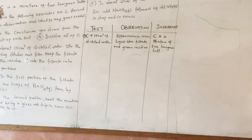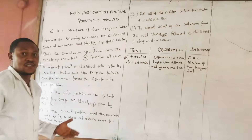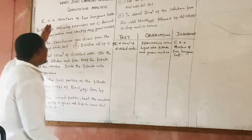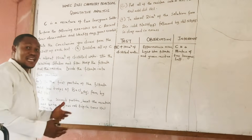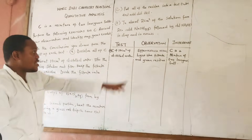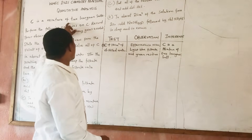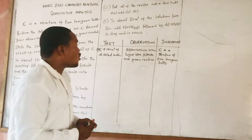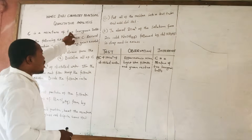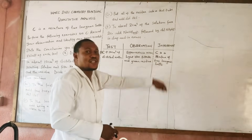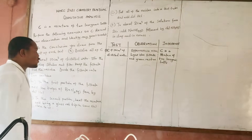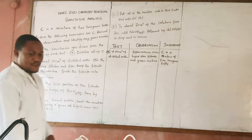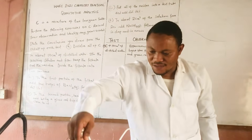It is possible for them to say C is a mixture of two salts — whether they say inorganic salts or just salts, record accordingly. With my observation it is confirmed: C is a mixture of two inorganic salts. They said keep the filtrate and the residue. So this is the light blue filtrate and the green residue is kept.